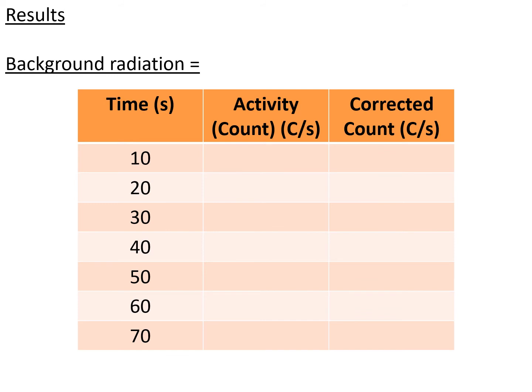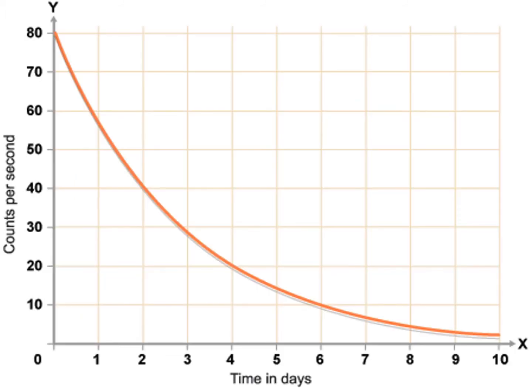Once we get the results and we've corrected it, this is the type of graph that you're going to get. Notice this is in time in days, but if you were to plot it it would be time in seconds. We get this lovely curved graph here, and you might be asking: how do we calculate or get the half-life from this graph?